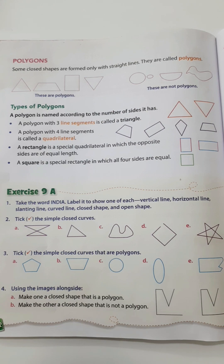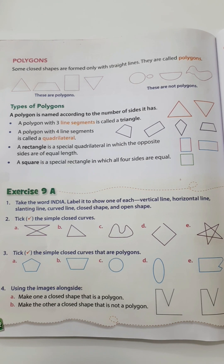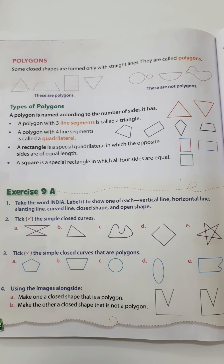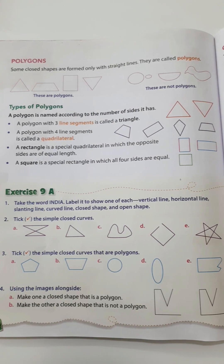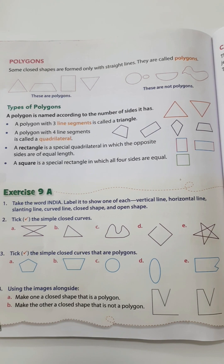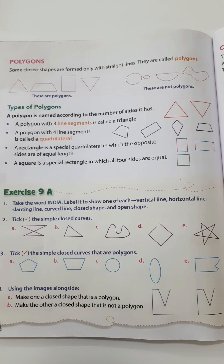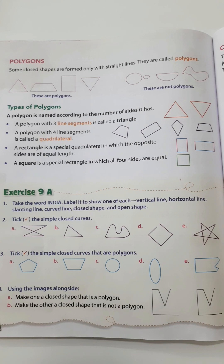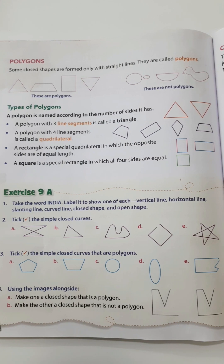The letter I again is a vertical line. The letter A is drawn with the help of slanting lines and a horizontal line. So we used every type of line: vertical line in I, N, D, and I; horizontal line in letter A; slanting line in letter N; curved line in letter D; closed shape in letter D; and open shape in letter N, because N started somewhere and ended somewhere and is not a closed shape.